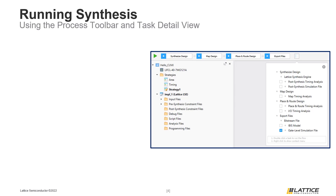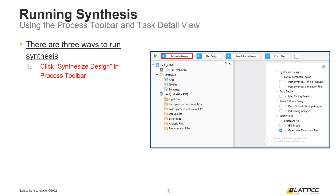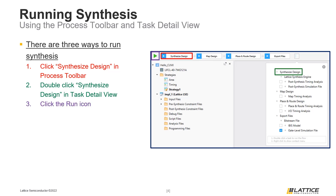The first way is to click the Synthesize Design icon in the process toolbar. The second way is to double-click the Synthesize Design header in the task detail view. The third way is to click the green Run icon in the process toolbar, which runs the entire Radiant project flow and generates a bitstream, while the first two methods only run synthesis. Once synthesis completes, the process toolbar and task detail view update to reflect that the step has finished.